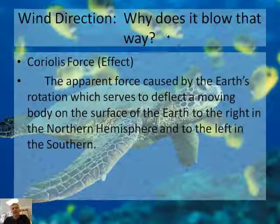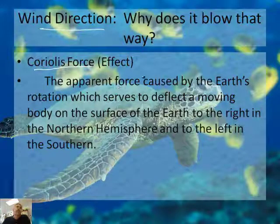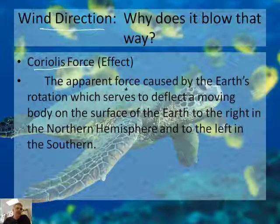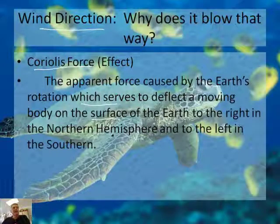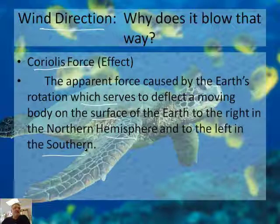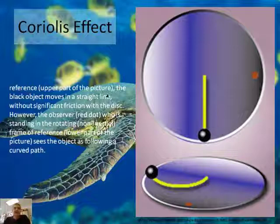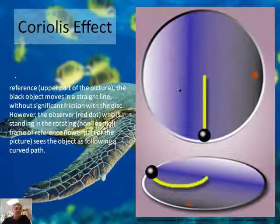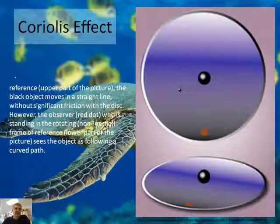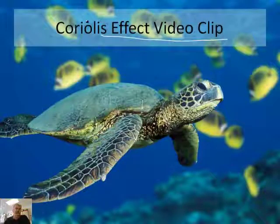Why does the wind blow in a particular direction, which causes the currents to go in a particular direction? There's something called the Coriolis effect. It is the apparent force caused by the Earth's rotation, which serves to deflect a moving body on the surface of the Earth to the right in the northern hemisphere and to the left in the southern. I found a really cool video that will explain this. It's like you have a turntable — you may do an activity in class. The Coriolis effect is illustrated here, and I think you're going to become experts on it.